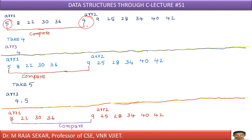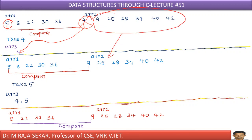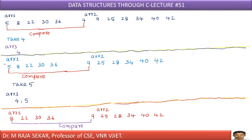Therefore, after combining arr1 and arr2, I must keep the result in arr3. Since 4 is smaller, I keep 4 in arr3. Now 4 is completed. The remaining elements in arr2 are from 9 to 42. Now comparing the first elements again: arr1 has 5, arr2 has 9. 5 is smaller, so take 5 and keep it in arr3. Already 4 is there, now I must keep 5 next.